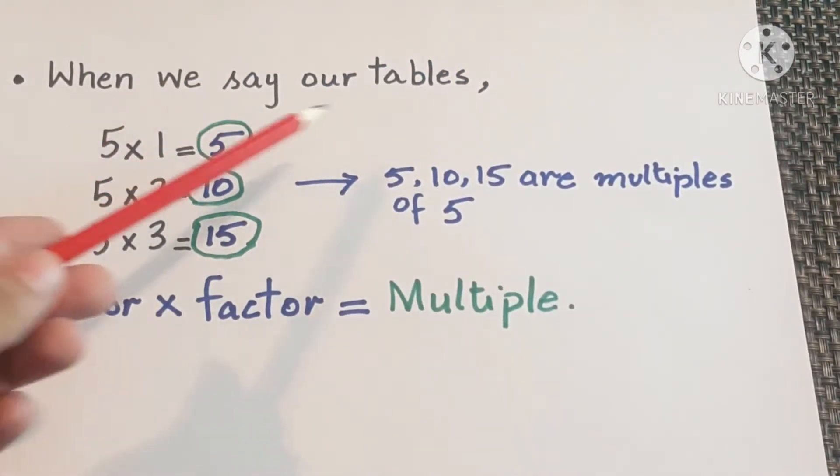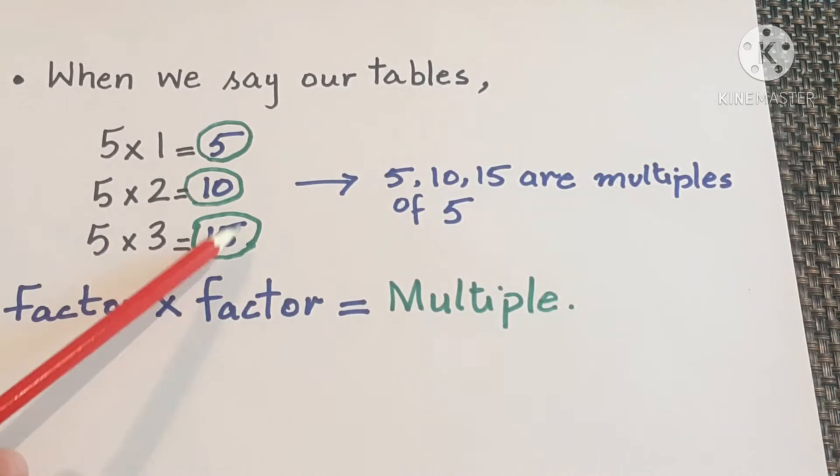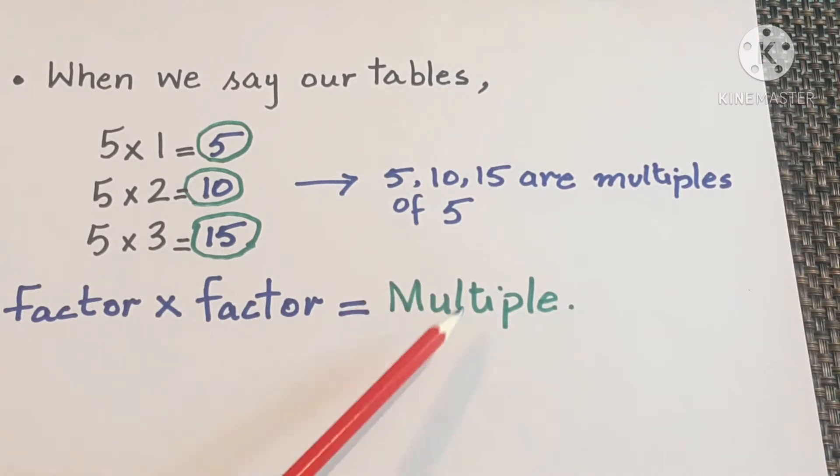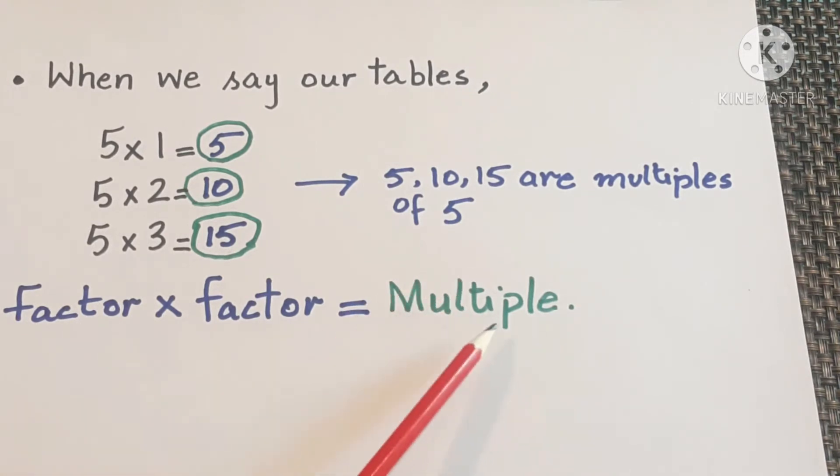When we say our tables like table of 5, 5 multiplied by 1 is 5, 5 multiplied by 2 is 10, 5 multiplied by 3 is 15. 5, 10, 15 are multiples of 5. So factor multiplied by factor is equal to multiple. Factor of 5 multiplied by factor of 5 is equal to multiple of 5.